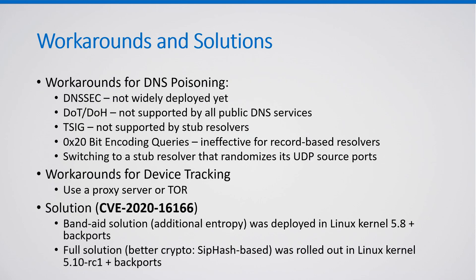Workarounds for DNS cache poisoning include using DNSSEC, DNS over TLS, DNS over HTTPS, and TSIG — but all these technologies are not widely enough deployed. Using 0x20-bit encoding queries is not effective when the target is a record-based resolver like systemd-resolved, because the query arrives at the attacker's authoritative nameserver. It is also possible to switch to a stub resolver that randomizes its UDP source ports instead of delegating their selection to the operating system.